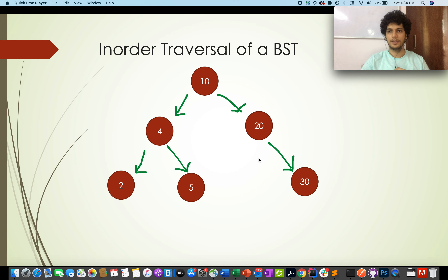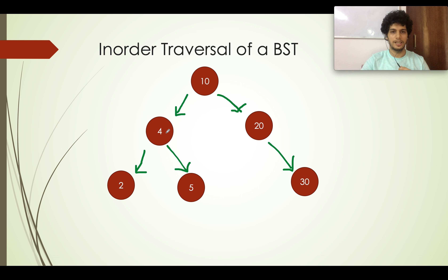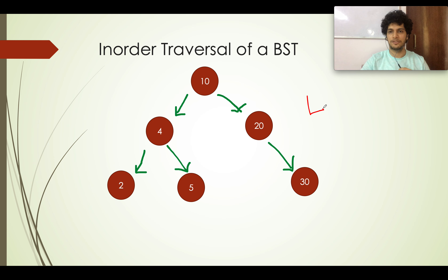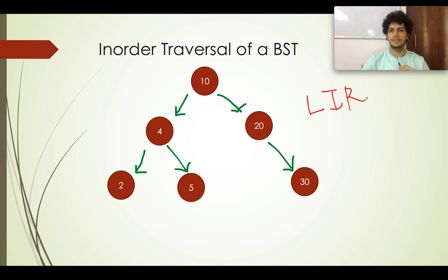Let's take this example — a binary search tree with the elements mentioned. Let me iterate through it in an inorder fashion. Inorder states: you first visit the left subtree, then you visit the node and print the info part, and then you visit the right subtree. So it is Left-Info-Right (LIR), or left-data-right.